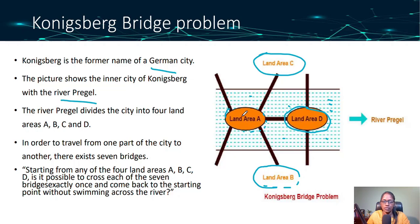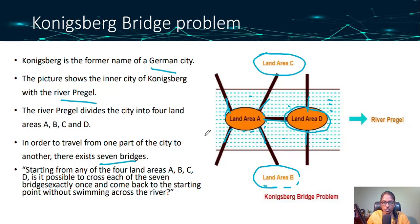In order to travel from one land to another land, they built seven bridges. So if I want to travel from this land to this land, these are all called bridges — one, two, three, four, five, six, and seven.